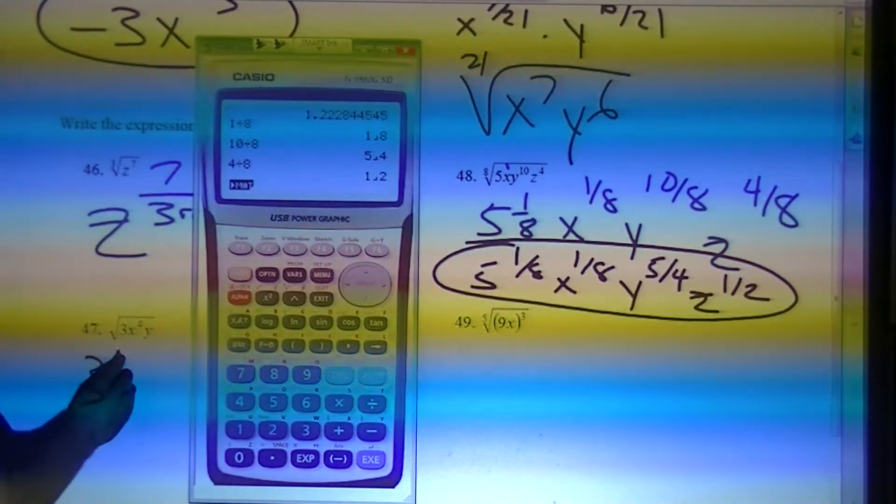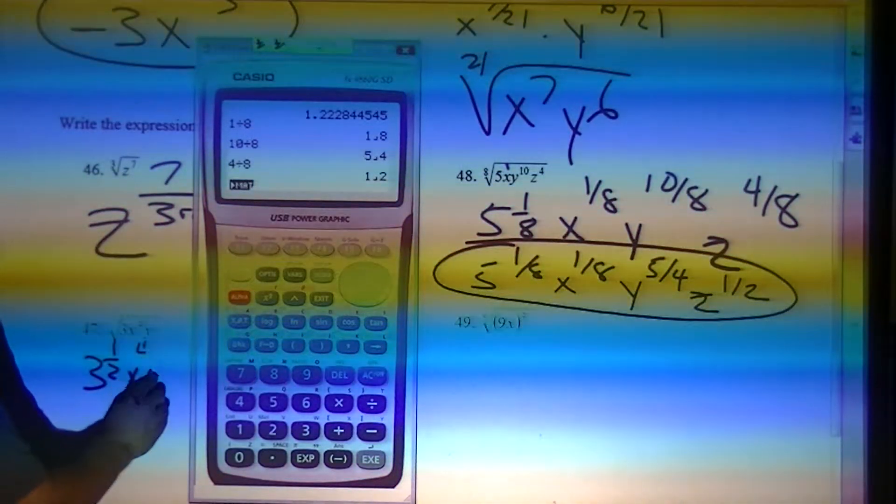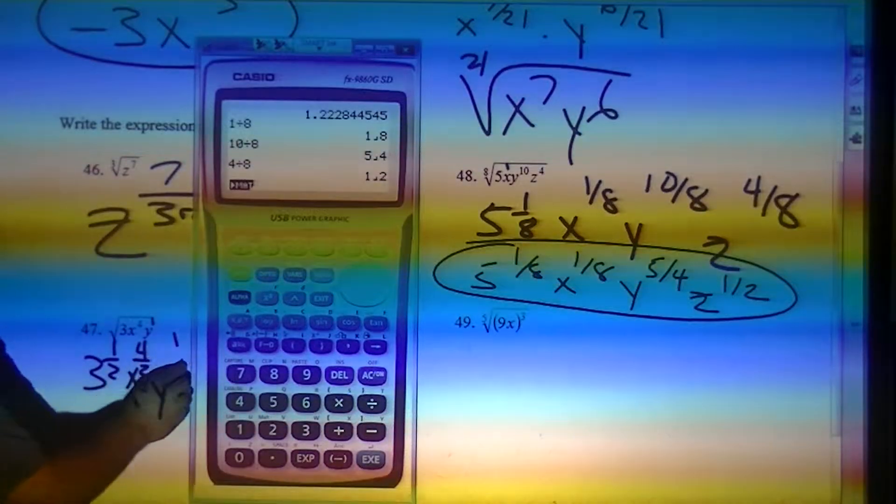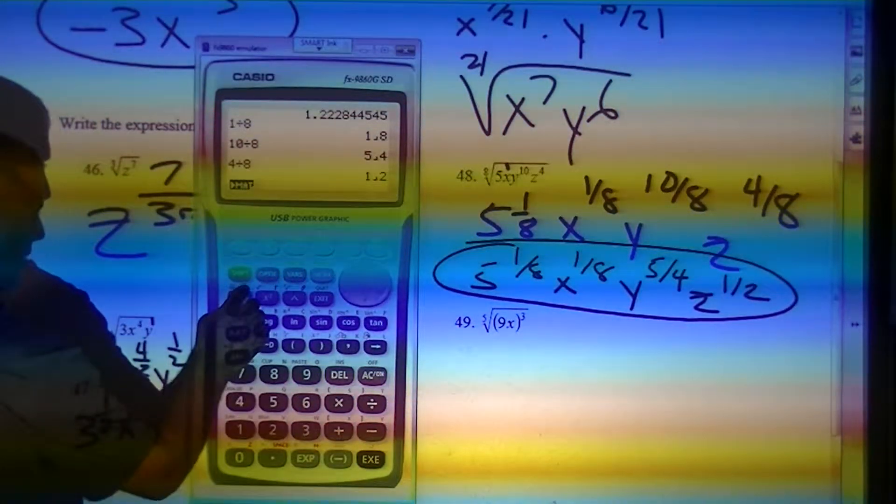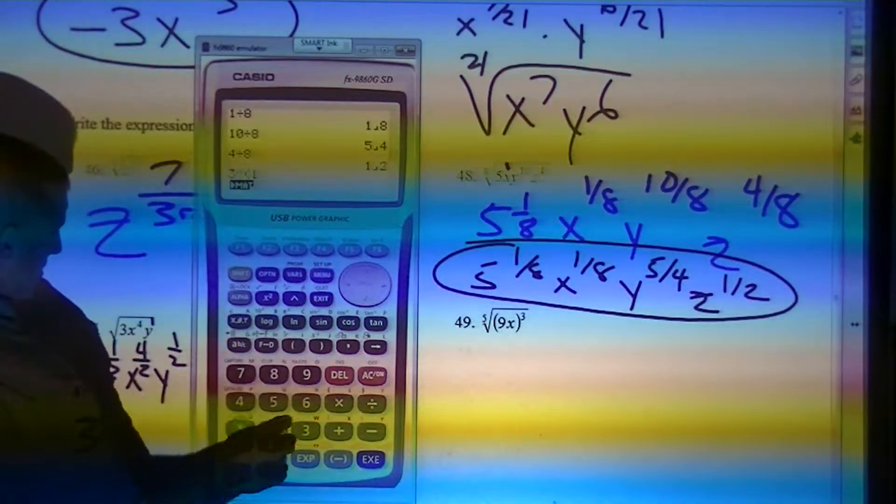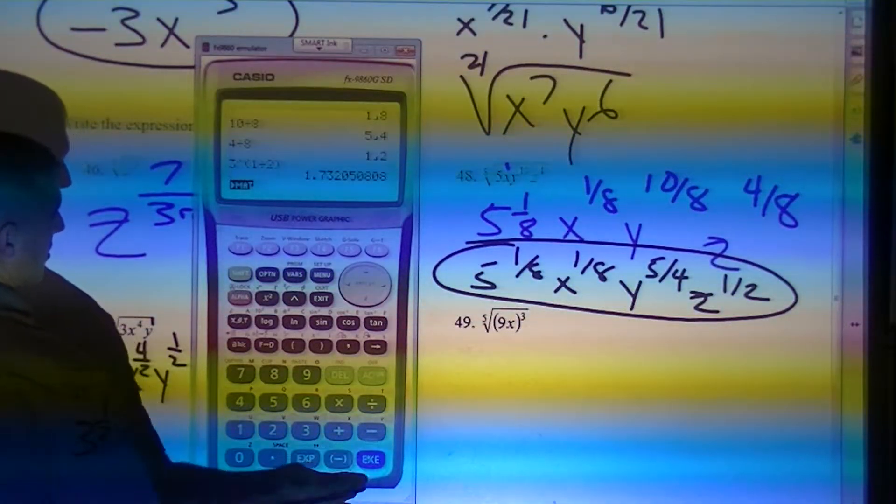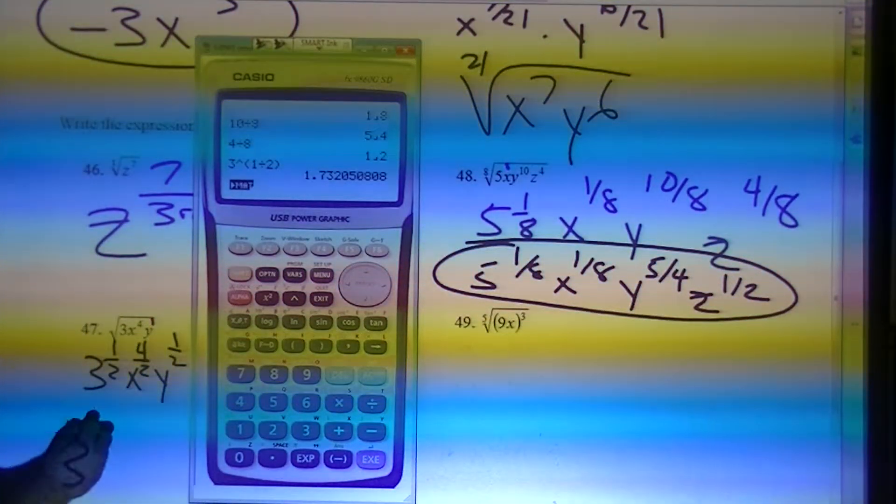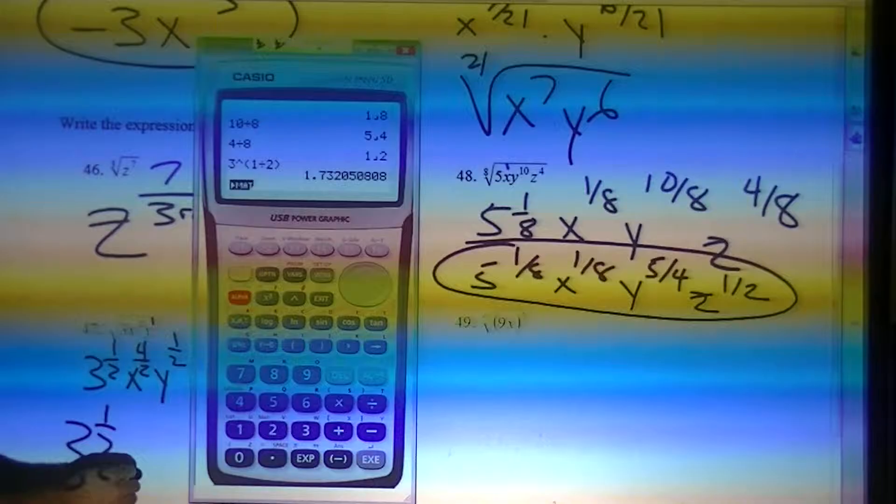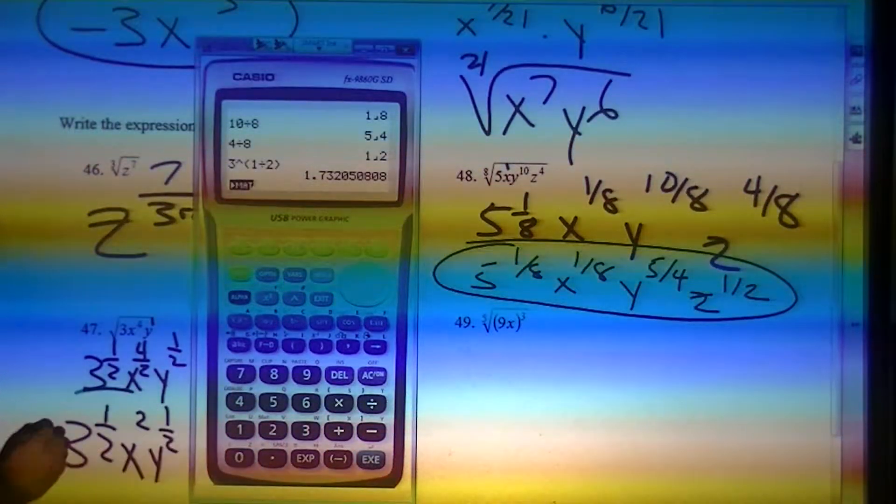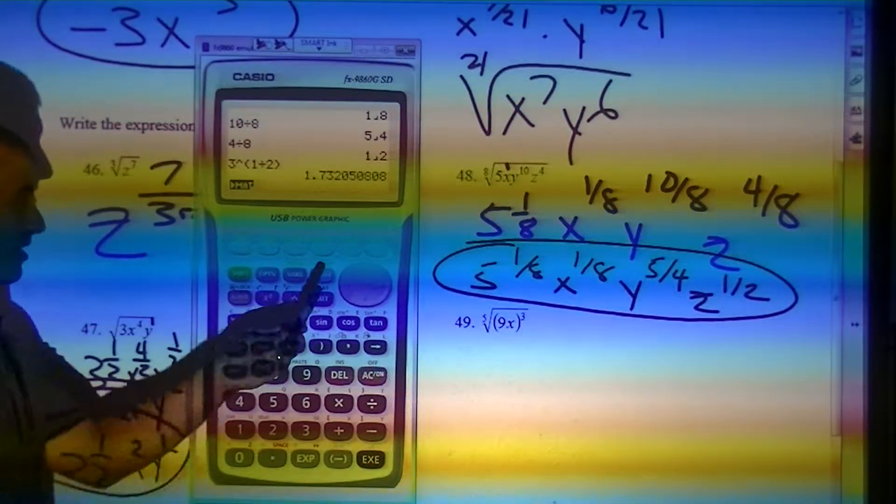This one would be 3 to the 1 half, x to the 4 halves, y to the 1 half. 3 to the 1 half power. Nothing happens here, so that's 3 to the 1 half. 4 divided by 2 would be 2. 1 divided by 2, we already know, not going to reduce.